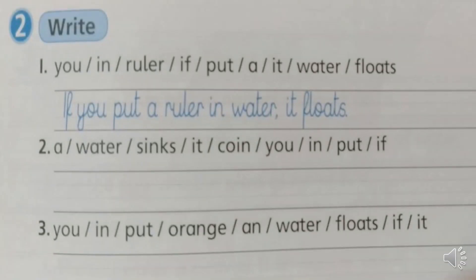Exercise number two. There are sentences that are not ordered in the correct way. You are going to read these words: you in ruler if put a it water floats. Your task is to write them correctly. For example, if you put a ruler in water it floats. Sentence number two, read it silently and try to do it alone. We have: a water sinks its coin you put if. If you put a coin in water, it sinks.